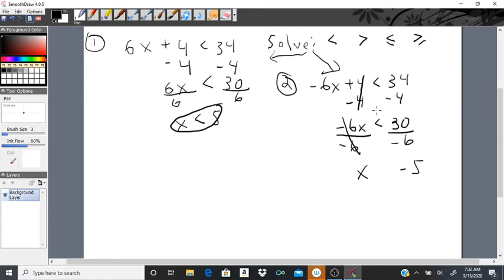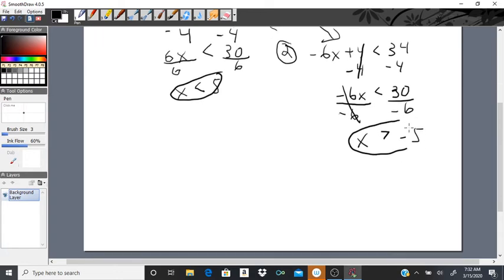I divided by a negative number, negative 6 on both sides. So this sign right there has to be flipped. And here's the answer to this problem. That brings us to the end of this problem. But let me show you the rule.